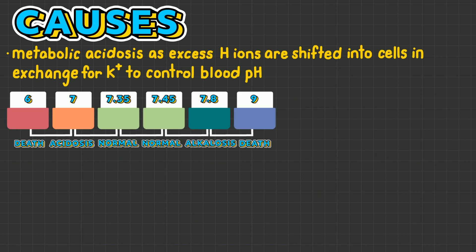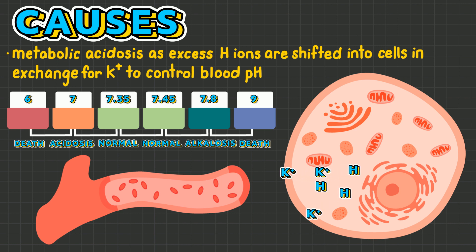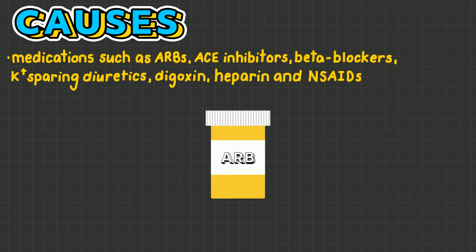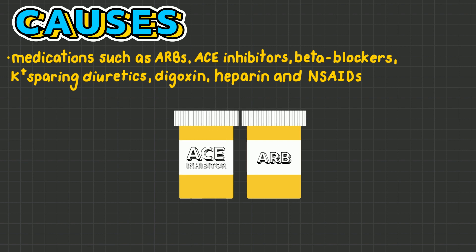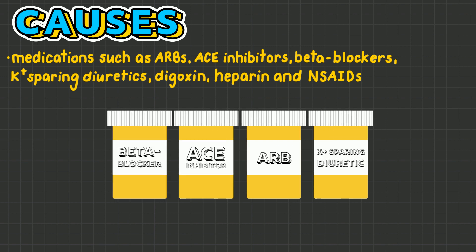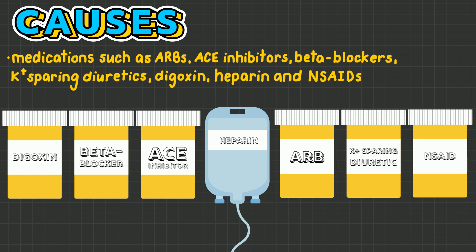Metabolic acidosis also causes hyperkalemia, as excess hydrogen ions are shifted into cells in exchange for potassium to manage blood pH. Many medications can also cause hyperkalemia, such as ARBs, ACE inhibitors, beta blockers, potassium-sparing diuretics, digoxin, heparin, and NSAIDs.